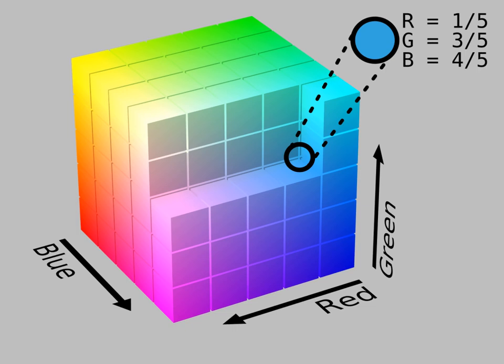As of 2007, sRGB is by far the most commonly used RGB color space. RGB is an abbreviation for red-green-blue.